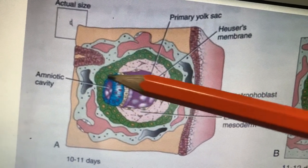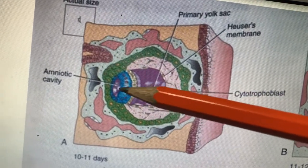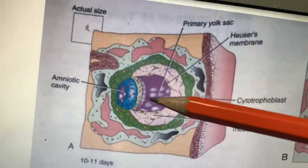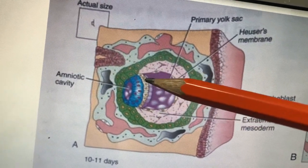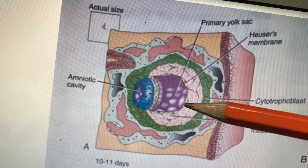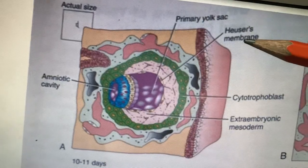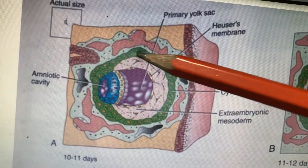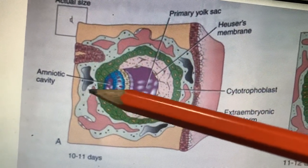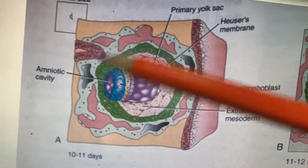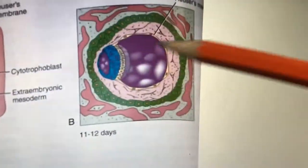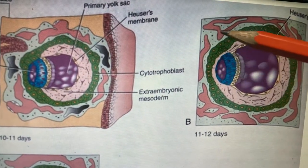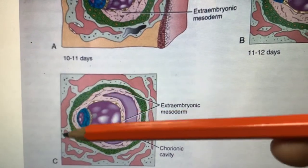This cavity is now called the primary or primitive yolk sac. Initially it was a blastocyst; now there is a cavity — the amniotic cavity in the epiblast area — and this area is called the primitive yolk sac. Cells from the hypoblast migrate and line the primitive yolk sac — that is called Heuser's membrane. The surrounding trophoblast is the cytotrophoblast and the encroaching one into the uterine endometrium is the syncytiotrophoblast, inside which you have the lacunae.